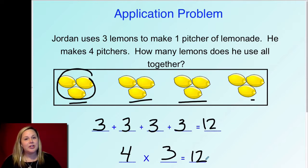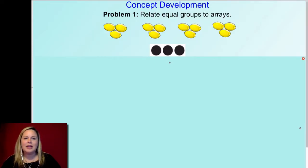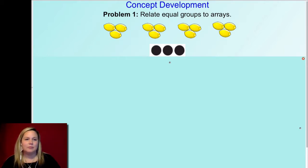Now we're going to jump into what we're doing in today's lesson. We're going to take the picture of our lemons that we just drew, and I want to draw an array that matches that. For this next part of the lesson, you need to grab your array template and slide it into your dry erase pocket to participate. If you don't have that, pause it and go grab it now. Let's jump in and get started.